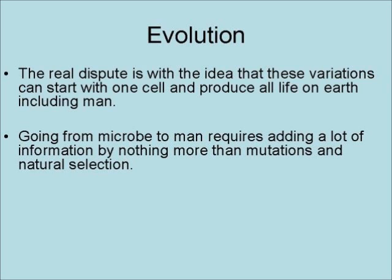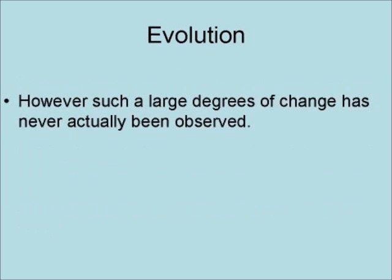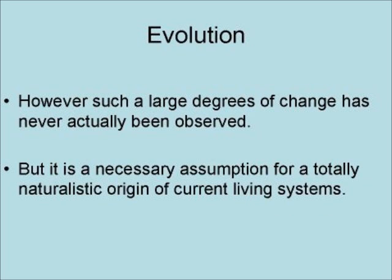Going from microbe to man requires adding a lot of information by nothing more than mutations and natural selection. The evolutionist argument is that, given enough time, mutations and natural selection can produce anything. However, such a large degree of change has never actually been observed, but it is a necessary assumption for a totally naturalistic origin of current living systems.